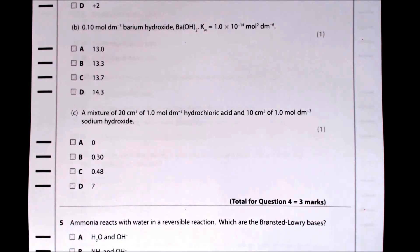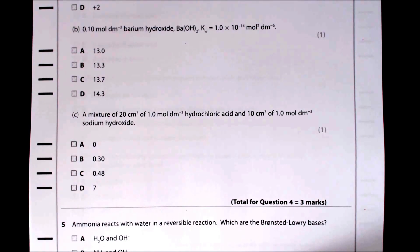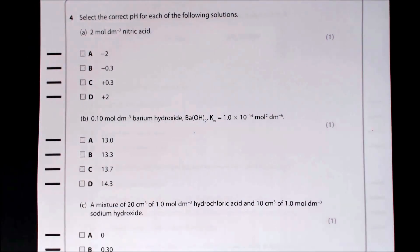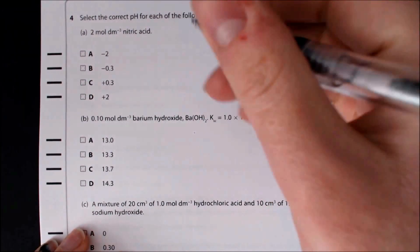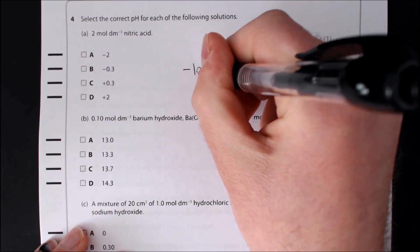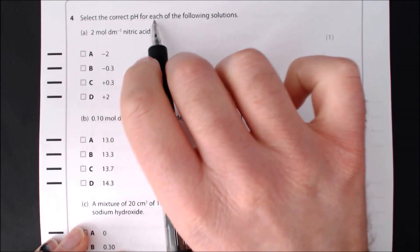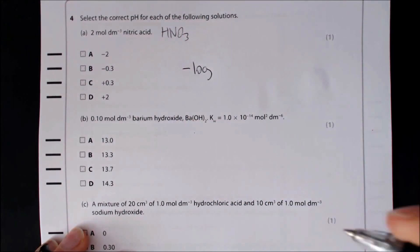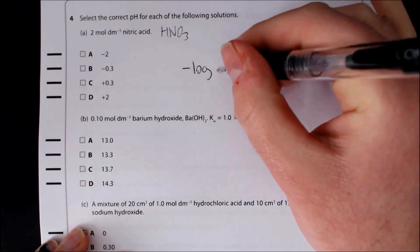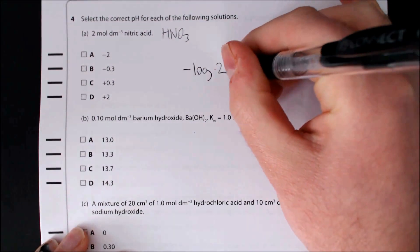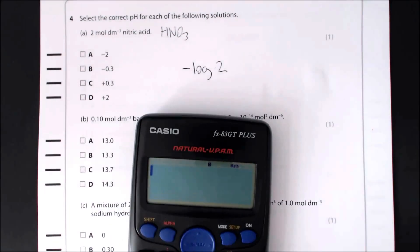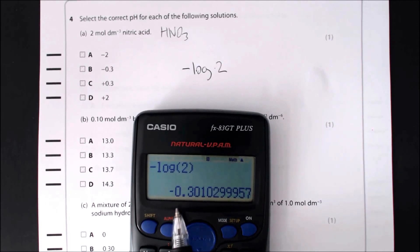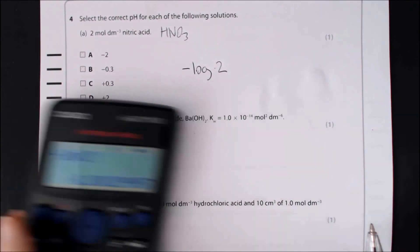Question four part one: calculate the pH of 2 mol dm⁻³ nitric acid. Since nitric acid is a strong acid (HNO₃), pH = −log[H⁺] = −log(2). Entering that into a calculator gives minus 0.3, so the answer is B.